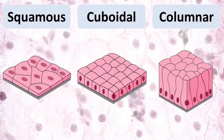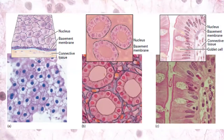Another classification takes into account the shape of the cells. Epithelial cells may be squamous — giving squamous epithelium; cuboidal — giving cuboidal epithelium; or columnar — giving columnar epithelium. Looking from the upper side, we can see squamous cells as flat, cuboidal cells as cube-shaped, and columnar cells as tall and column-shaped.